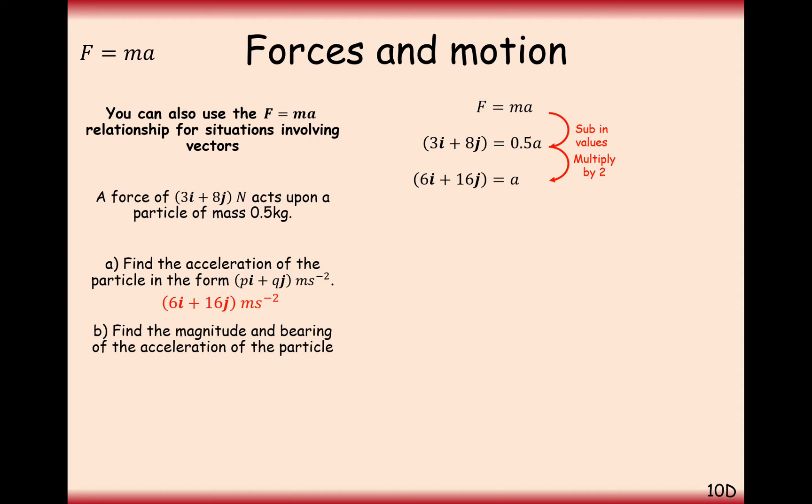So that effectively means that if we're thinking about a Cartesian coordinate grid, x and y axis, that every second that goes past we're increasing our speed by 6 in the x direction, and for every second that goes past we're increasing our speed by 16 in the y axis direction.